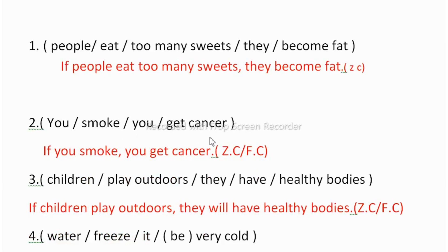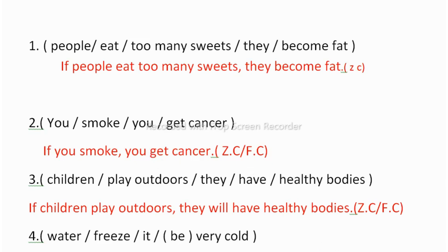The second one is: 'You smoke, you get cancer.' Here you can write zero conditional or first conditional — both sentences are correct, but you have to choose one. If you choose zero conditional: 'If you smoke, you get cancer' (if + present simple + present simple). If you want to choose first conditional, you can write: 'If you smoke, you will get cancer' — you add 'will' to make it first conditional.